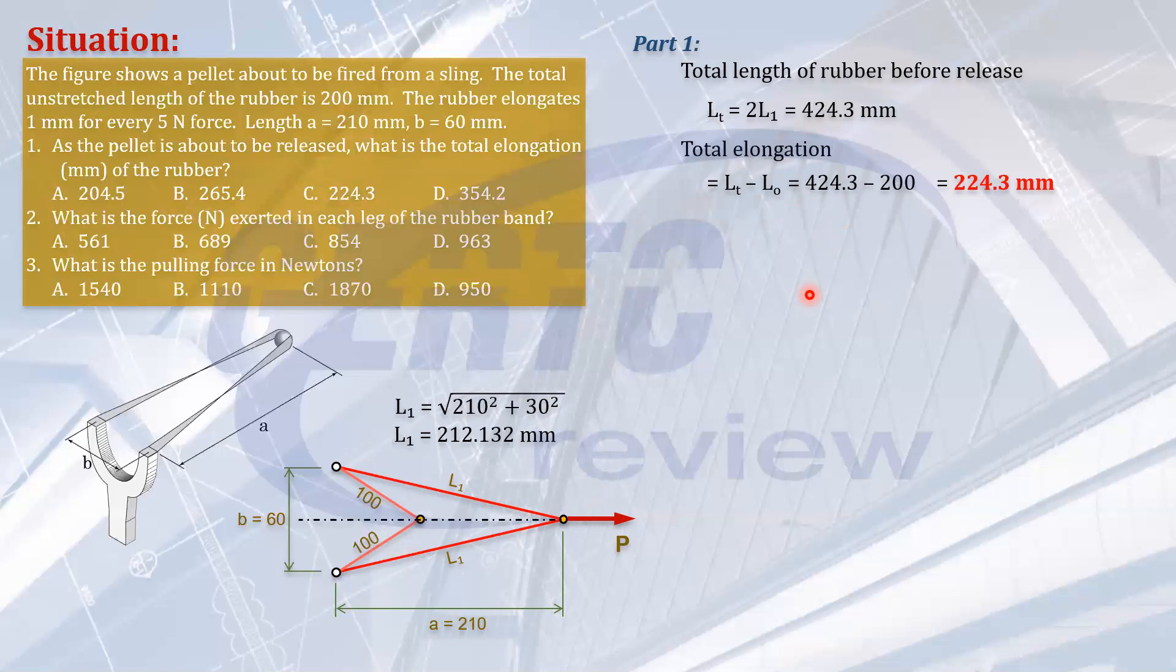Part 2. What is the force exerted in each leg of the rubber band? Let's compute the force. To compute the force, we will use the spring formula. These are the forces. Let's call it F1. So to compute the force, we need to compute the elongation of each leg.